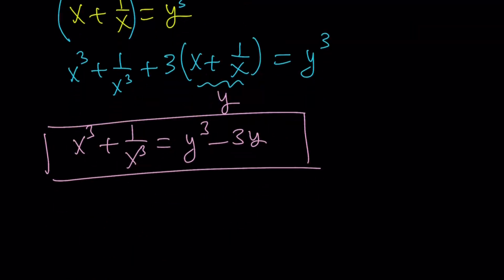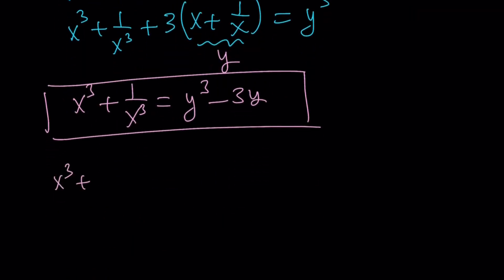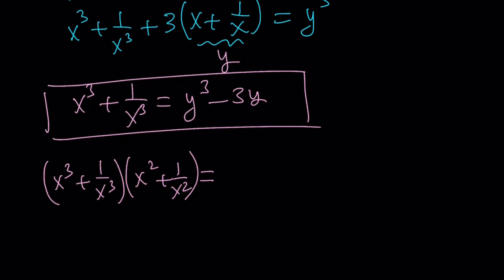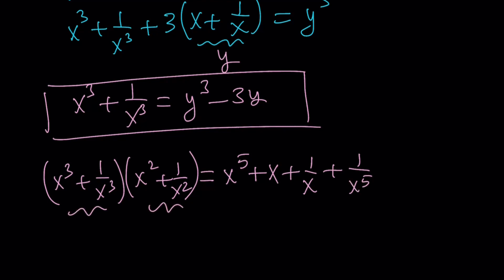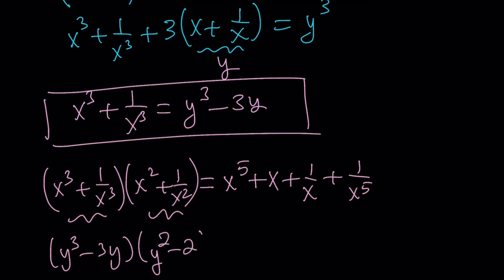So I have an expression for the sum of cubes and for the sum of squares. Let's put these two together — multiply them, because that will give us the fifth powers and some extra terms, which are easy to handle. If you distribute, you get x to the fifth, plus x cubed times 1 over x squared which is just x, plus 1 over x cubed times x squared which is 1 over x, plus 1 over x to the fifth. The first factor is y cubed minus 3y and the second is y squared minus 2.